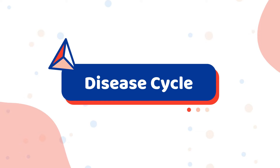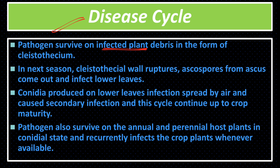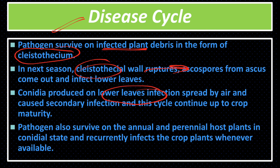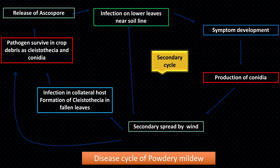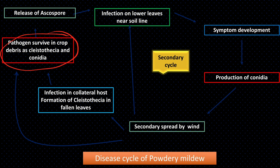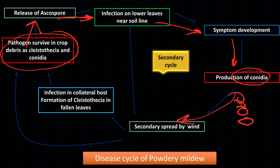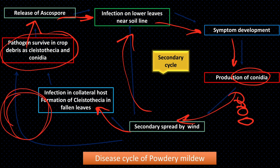Disease cycle of powdery mildew: Pathogen survives in infected plant debris as cleistothecia. Cleistothecia rupture and ascospores come out. Ascospores infect lower leaves, producing symptoms. Conidia form in chains and spread by wind to other plant leaves, causing secondary infection. When crop ends, pathogen forms cleistothecia in crop debris to survive until next season as primary inoculum.